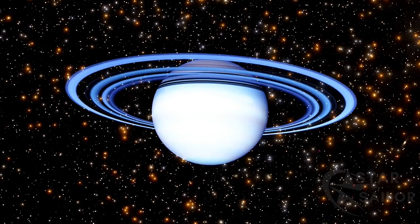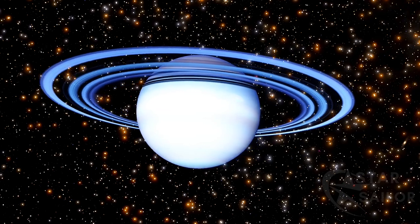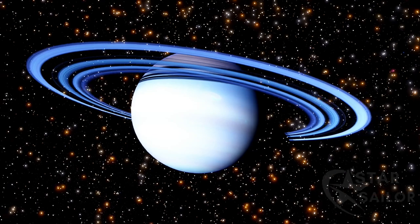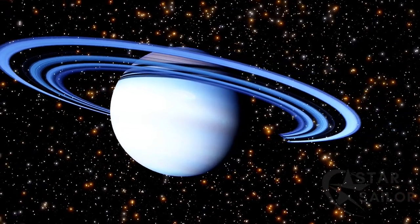Gas giants are the most commonly found type of planet because their large size makes them easier to detect with instruments. Newer generations of telescopes will likely discover many more of these planets.